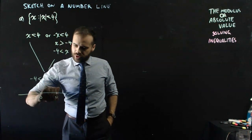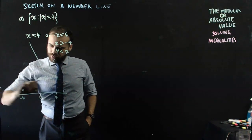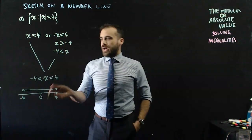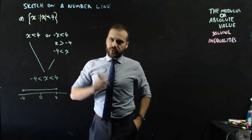Here's my 0, here's my 4, here's my negative 4, and I can draw an open circle here, an open circle here, and draw a line between them, and I have graphed that on a number line.